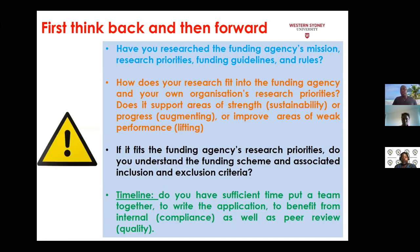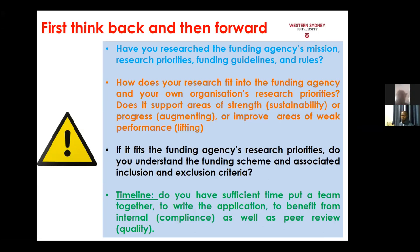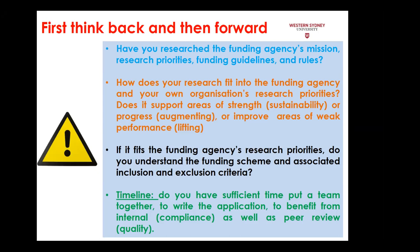First, you need to understand whether you are aware of the funding agency's mission, research priorities, guidelines, rules, and exclusion and inclusion criteria — because you don't want to waste time putting together a grant proposal only to realize at the last minute that you are not eligible. You need to ensure that what you put forward fits the funding agency's area of research priority, but also that you are supporting your own institution in terms of sustainable research — tapping into an existing program where you can show long-term sustainability, or augmenting an area where the institution is building a track record.